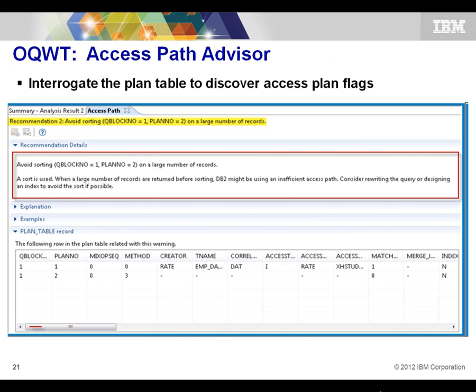The access path advisor flags what it suspects needs to be changed or improved to give you a better access path. It gives you the recommendation directly, telling you what to look out for — in most cases it could lead to a new index, a modified index, or maybe a change to a query, such as changing a predicate within the query.